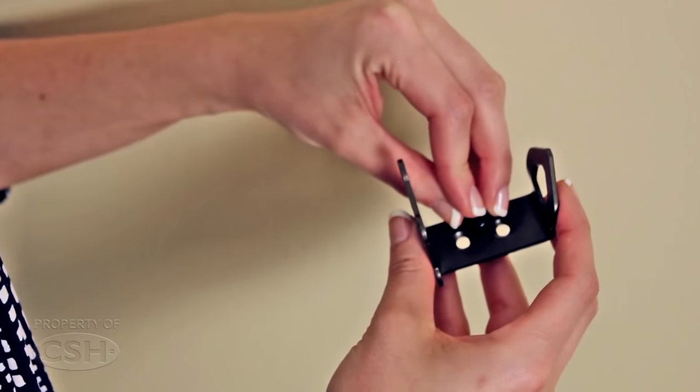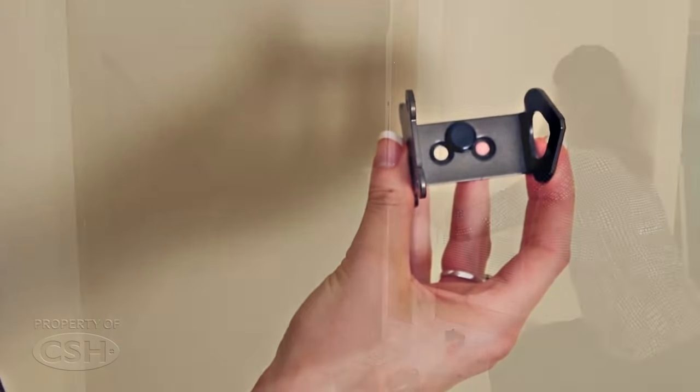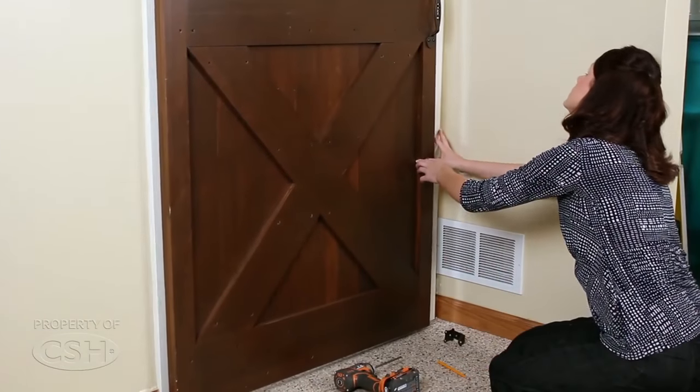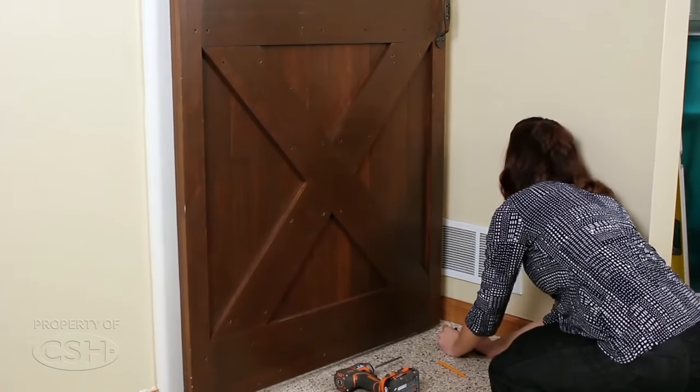Apply the door bumper onto the door stop, set the door in the closed position, and align the door bumper to stop the door in this position.